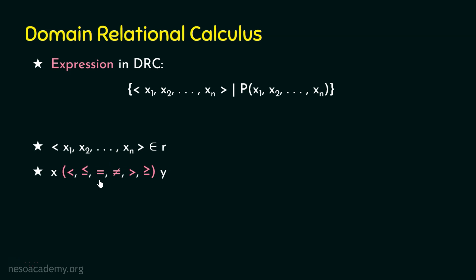The right-hand side does not always have to be another domain variable. There are instances where we need to give a specific constant — for example, salary equals 10,000, where 10,000 is a constant, not a domain variable. So it is also possible for a domain variable to be compared with a constant. If you are directly watching domain relational calculus, I recommend watching tuple relational calculus first to understand the basics, which will make most things here easier to understand.